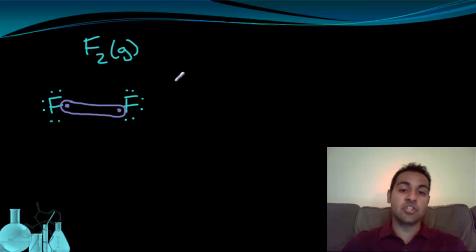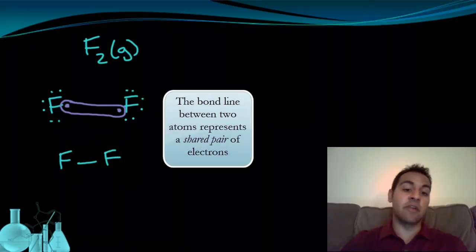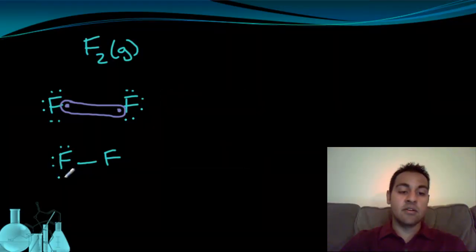They both meet the octet rule by sharing. Now, this shared pair of electrons, the shared pair, is represented by a line. So we replace them by putting a line between the two fluorine atoms. Then we put in the remaining electrons that are not involved in bonding. We call them non-bonding electrons. So two terms there. The shared pair, those are the ones in the bond, get represented by a line. And then we have the non-bonding electrons that surround the atom. Now, what we have here is actually the Lewis structure for this compound.